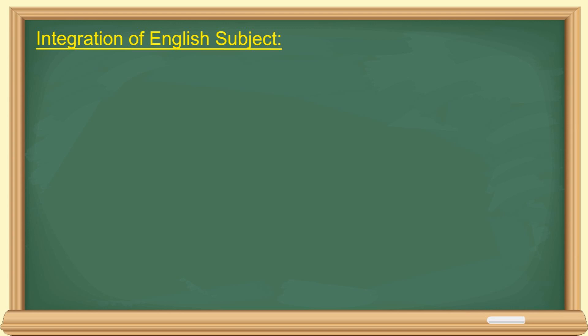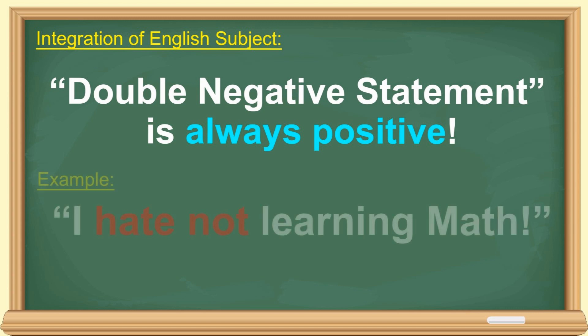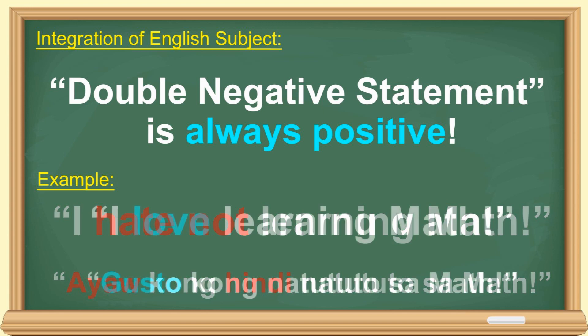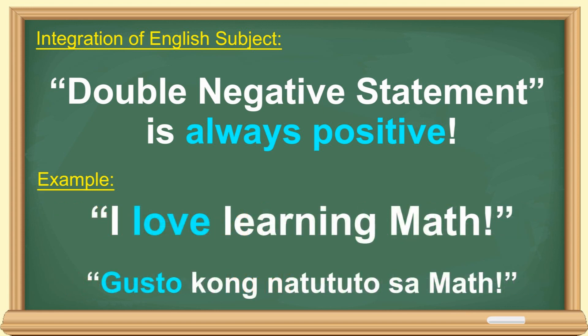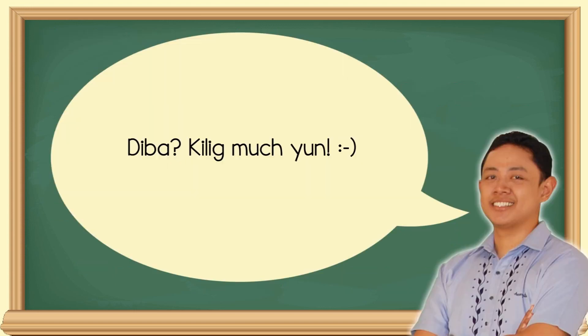Integration of English subject tayo ngayon. Sa English, may tinatawag silang double negative statement. At pag ganun, positive ang ibig sabihin nun. Sample: I hate not learning math. Sa Tagalog, ayaw kong hindi natututo sa math. Ayaw kong hindi natututo. Ibig sabihin, gusto kong natututo sa math. Gets? Heto pa, para sa mga pusong umiibig. Medyo cheesy. Pag sinabing, I will never not love you. The sweet meaning is, I will always love you. Diba? Kiligmats yun.